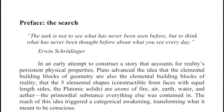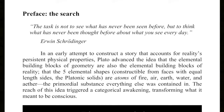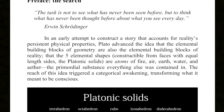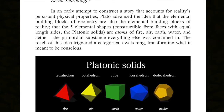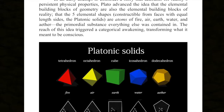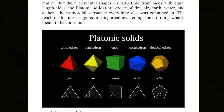In an early attempt to construct a story that accounts for reality's persistent physical properties, Plato advanced the idea that the elemental building blocks of geometry are also the elemental building blocks of reality — that the five elemental shapes constructible from faces with equal length sides, the Platonic solids, are atoms of fire, air, earth, water, and ether, the primordial substance everything else was contained in.